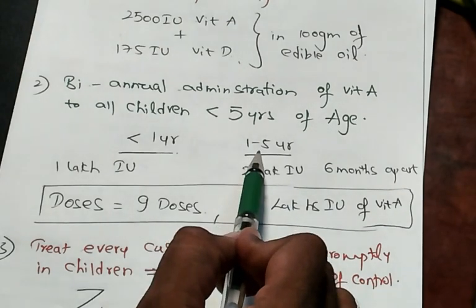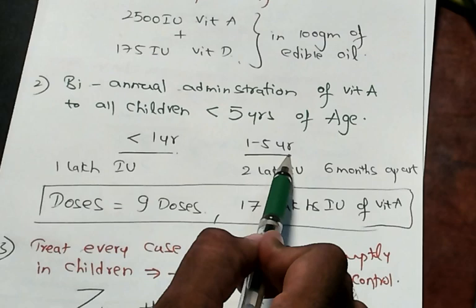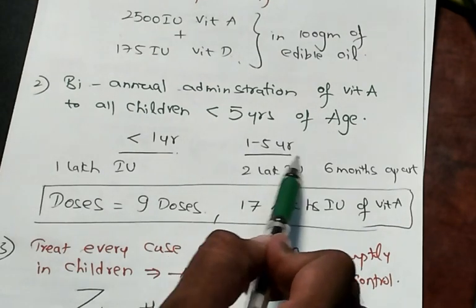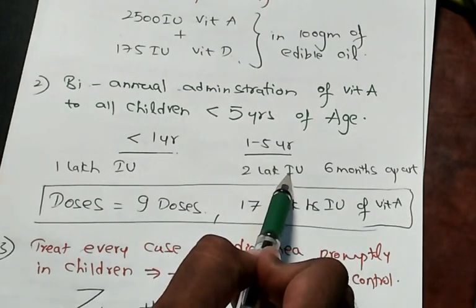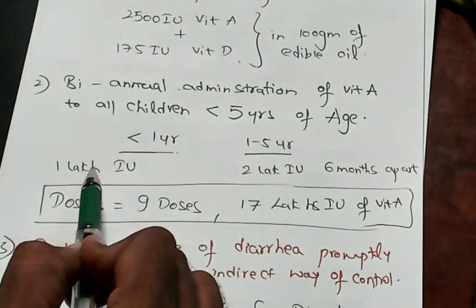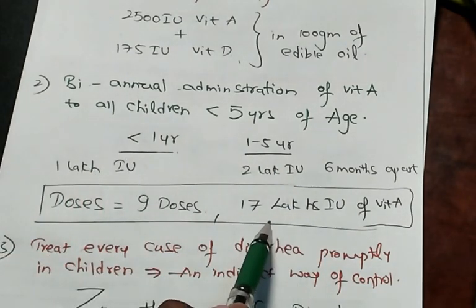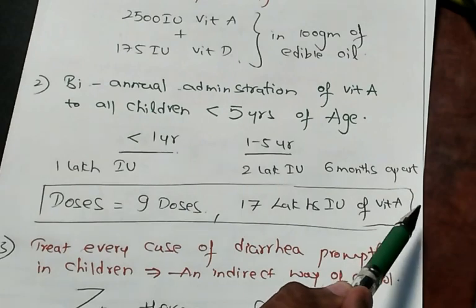Second year, third year, fourth year, fifth year. Totally 4 years into 4 lakhs which means 16 lakhs. First year we gave 1 lakh, so totally 17 lakhs international units of vitamin A.